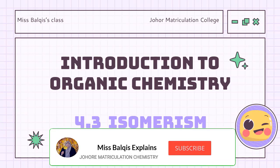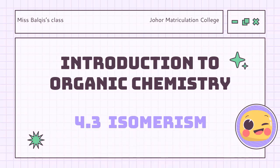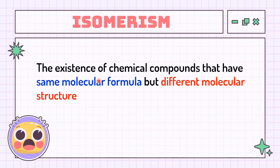Assalamualaikum warahmatullahi wabarakatuh and hello everyone. In this video, we're going to learn about the third sub-topic in Introductions to Organic Chemistry called Isomerism — the existence of chemical compounds that have the same molecular formula but different molecular structure. When they have different molecular structure, their physical and chemical properties will also be different from one another.